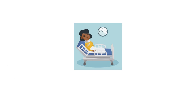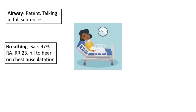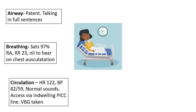We're going to do our A-to-E assessment. Her airway is patent — she's talking in full sentences. For B: her sats are 97%, respiratory rate is 23, chest is clear, and she shows no signs of respiratory distress. For C: heart rate is up, blood pressure is low at 82 over 59, she has normal heart sounds, and you notice she has an indwelling line — really important to check for central lines, Hickman lines, PICC lines. Always take a drug history to check for antihypertensives, as that may change how worried you are.